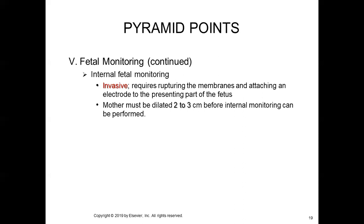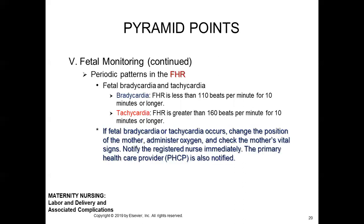The average pressure during contraction is usually 50 to 80 millimeters of mercury. By internal fetal monitoring, we can achieve accurate assessment of fetal heart rate. The normal fetal heart rate is 110 to 160. If we find fetal heart rate less than 110, it is bradycardia. If greater than 160 beats per minute for 10 minutes or longer, it is tachycardia — fetal tachycardia.